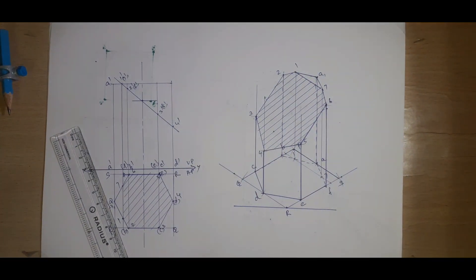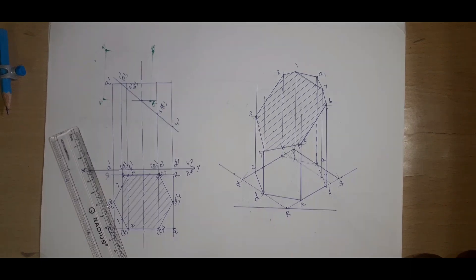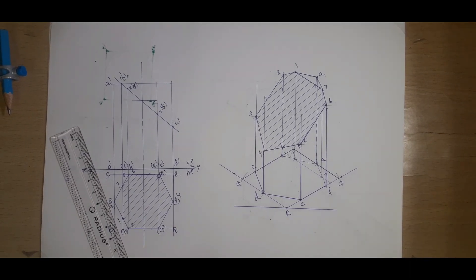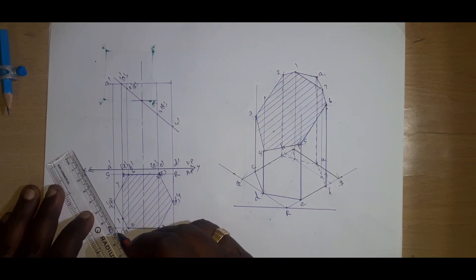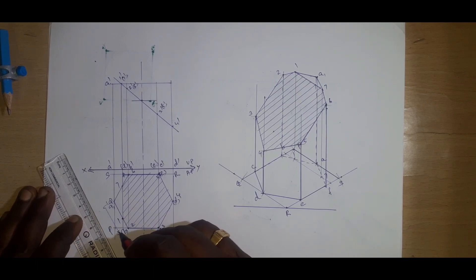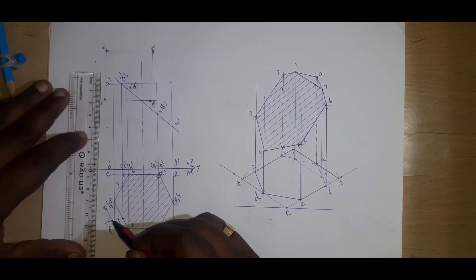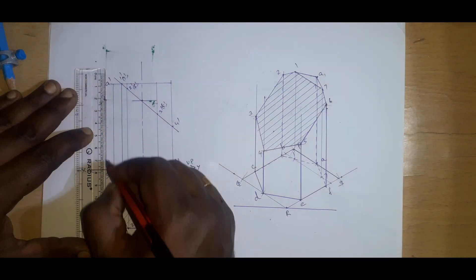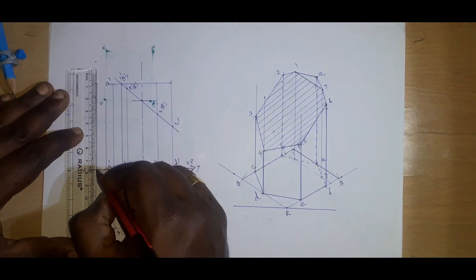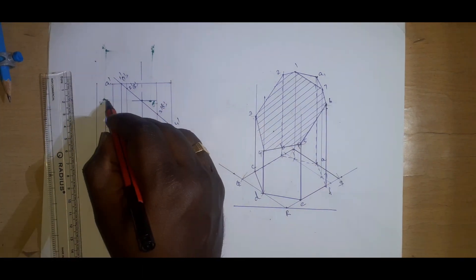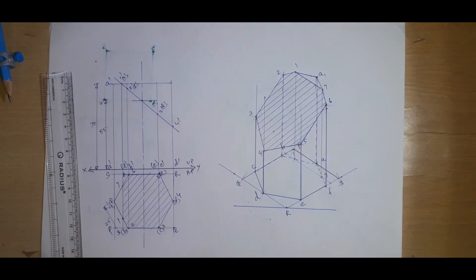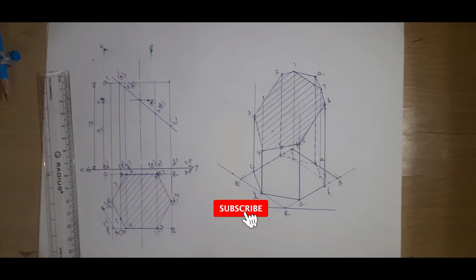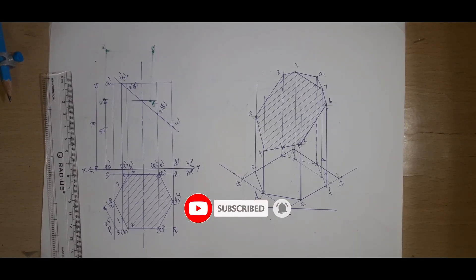So this is our required solid. Here also we can make the dimensions: this is 25, this is 55, and this is 70. So we got all the values. This is the way of proceeding the problem. Thank you.